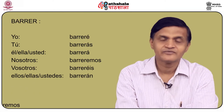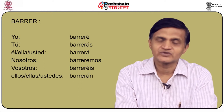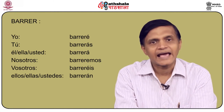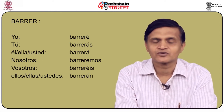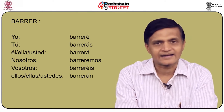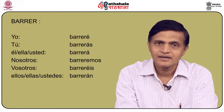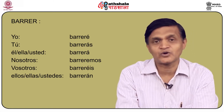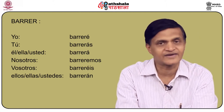Let us pick another verb, which is barrer, which is to sweep. The conjugation of barrer in the future is as follows: yo barreré, tú barrerás, él/ella/usted barrerá, nosotros barreremos, vosotros barreréis, and ellos/ellas/ustedes barrerán. Only the nosotros form doesn't have an accent; otherwise all the other forms have an accent.